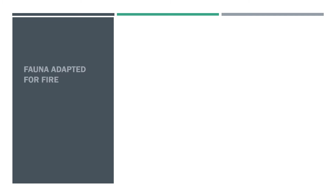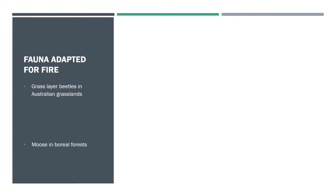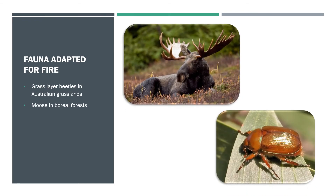Some fauna have adapted to fire as well. Grasslayer beetles in Australian grasslands and moose in the boreal forest have both shown that they can thrive in post-fire environments.